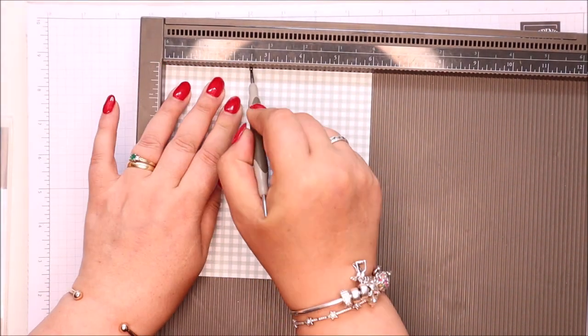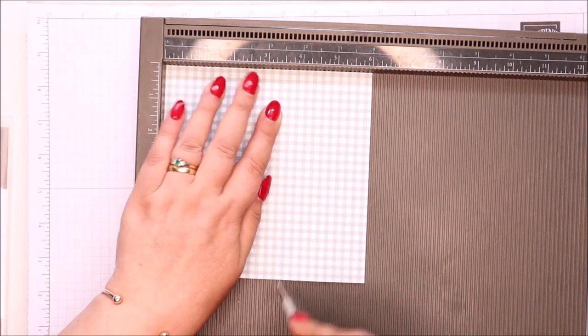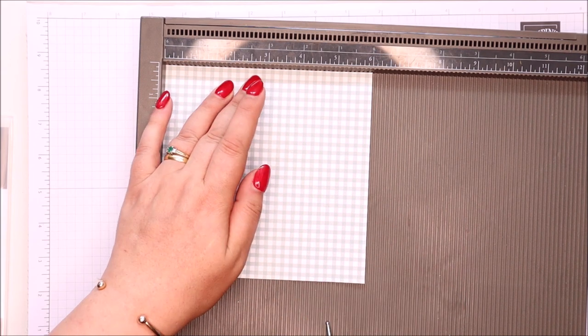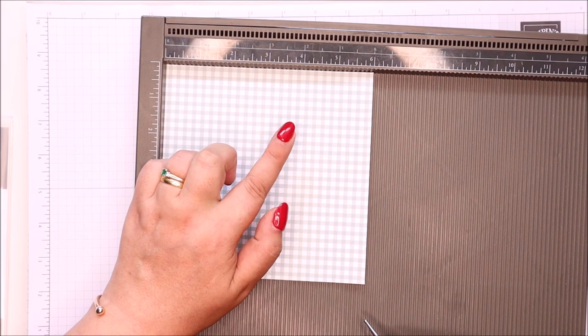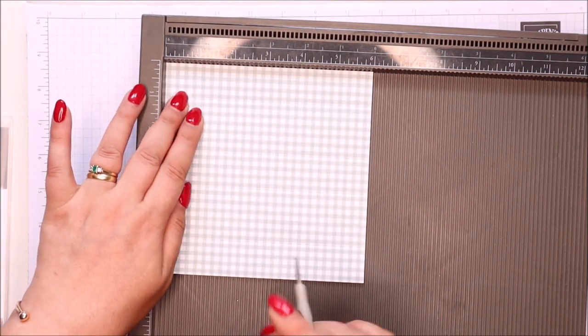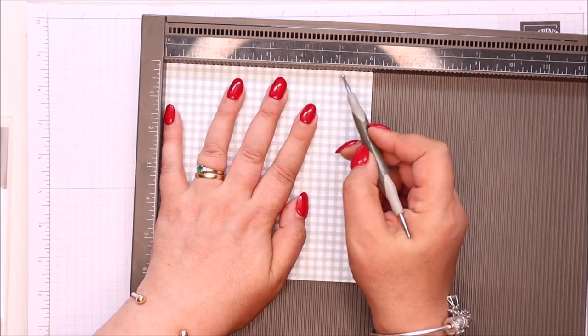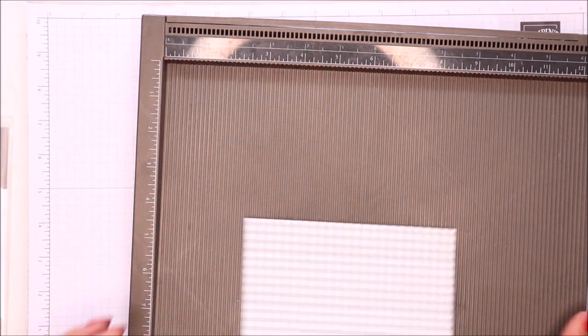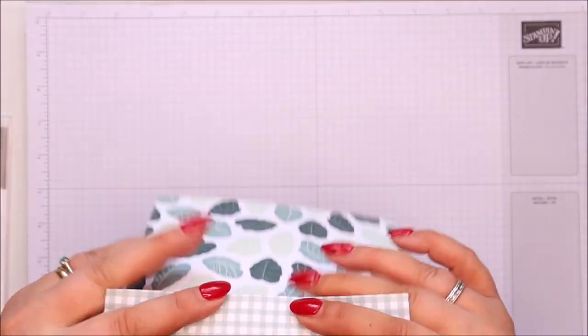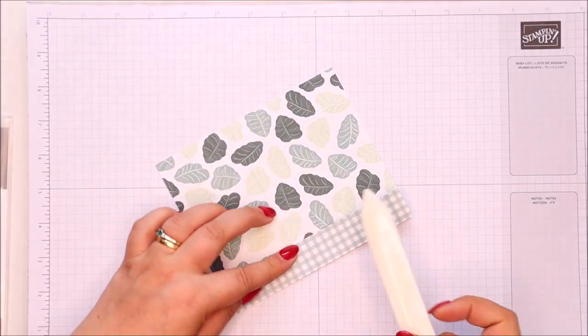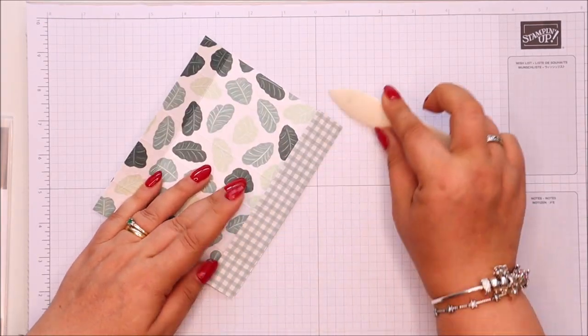On the first side, score it at one, two and a half, three and a half, and five inches, which in metric is two and a half, six point three, eight point seven, and twelve point five. On the second side, score it at one and five inches, which is two and a half and twelve and a half. Okay, so let me get this burnished.